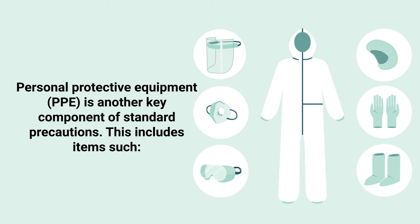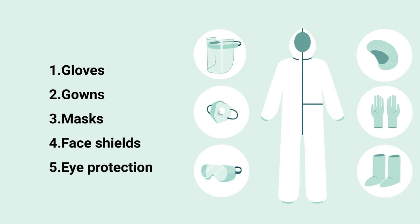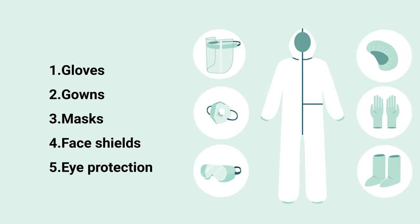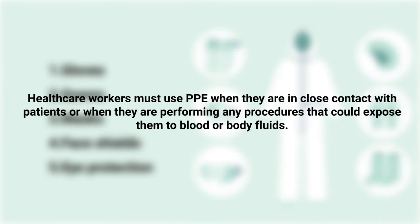Personal protective equipment, also known as PPE, is another key component of standard precautions. This includes items such as: number one, gloves; number two, gowns; number three, masks; number four, face shields; and number five, eye protection. Healthcare workers must use PPE when they are in close contact with patients or when performing procedures that could expose them to blood or body fluids.